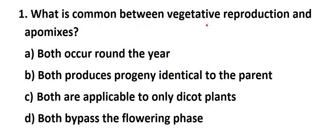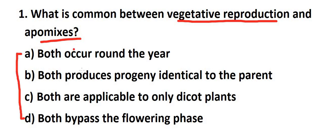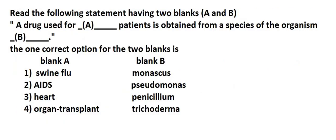Next question: what is common between vegetative reproduction and apomixis? Both are types of asexual reproduction. In asexual reproduction there is no meiosis or syngamy — gametes are not fused. Both processes produce offspring that are identical to the parent. This is the common feature — offspring identical to parents.